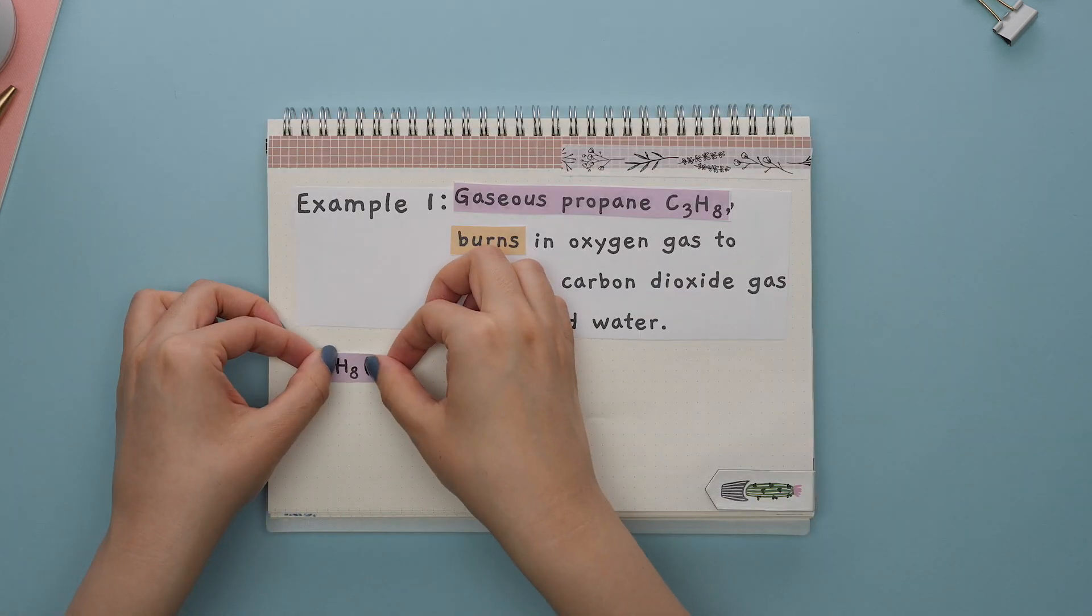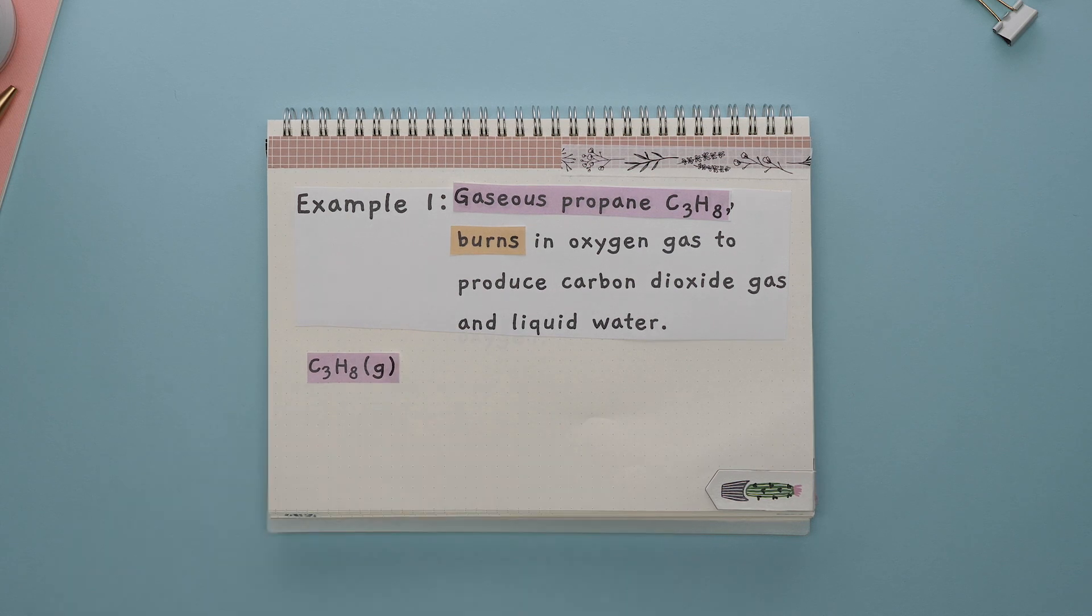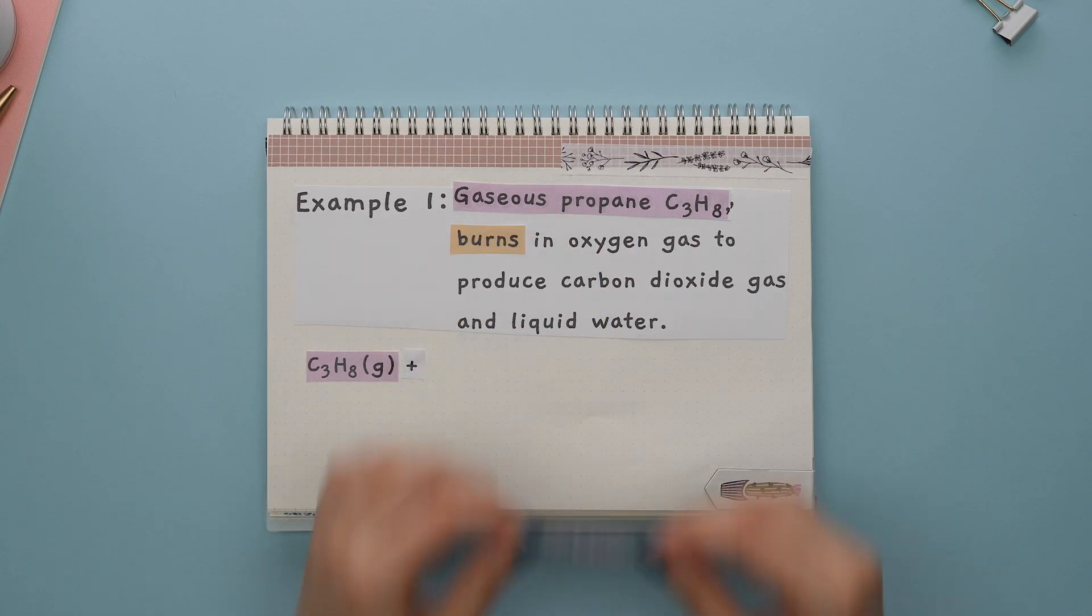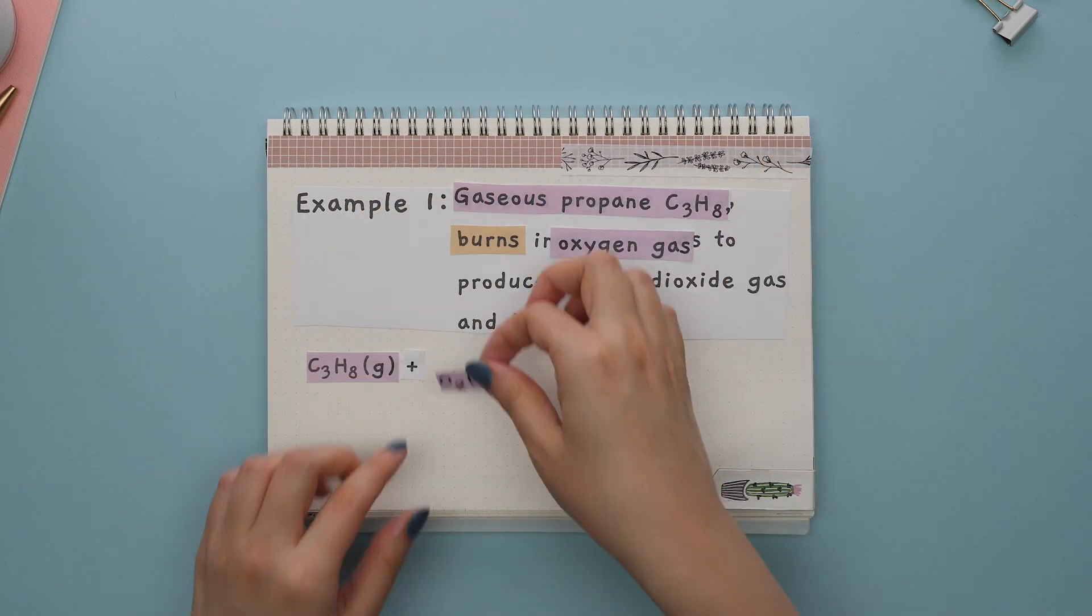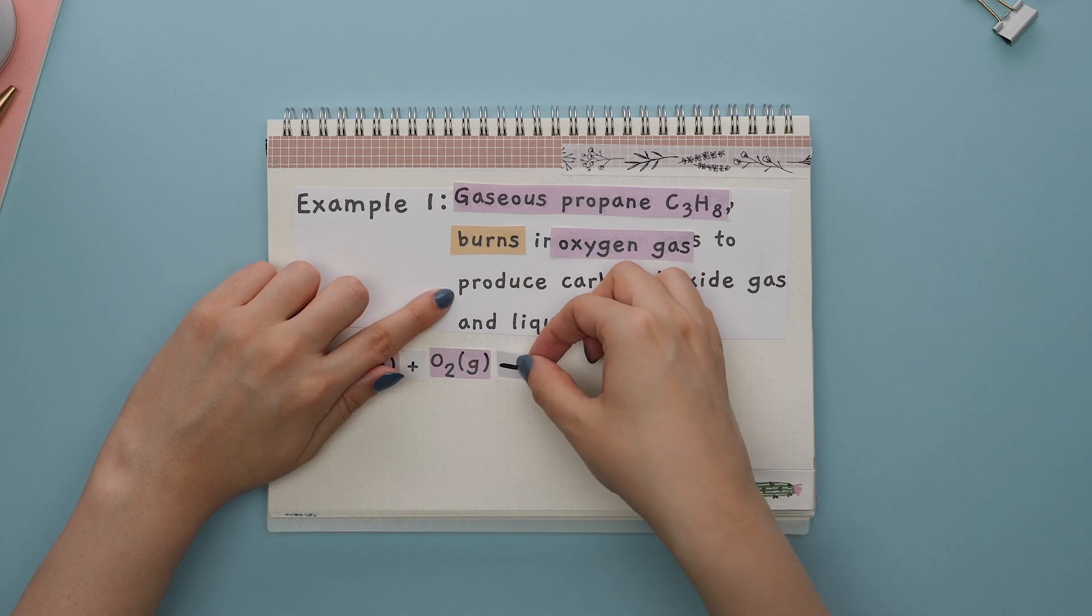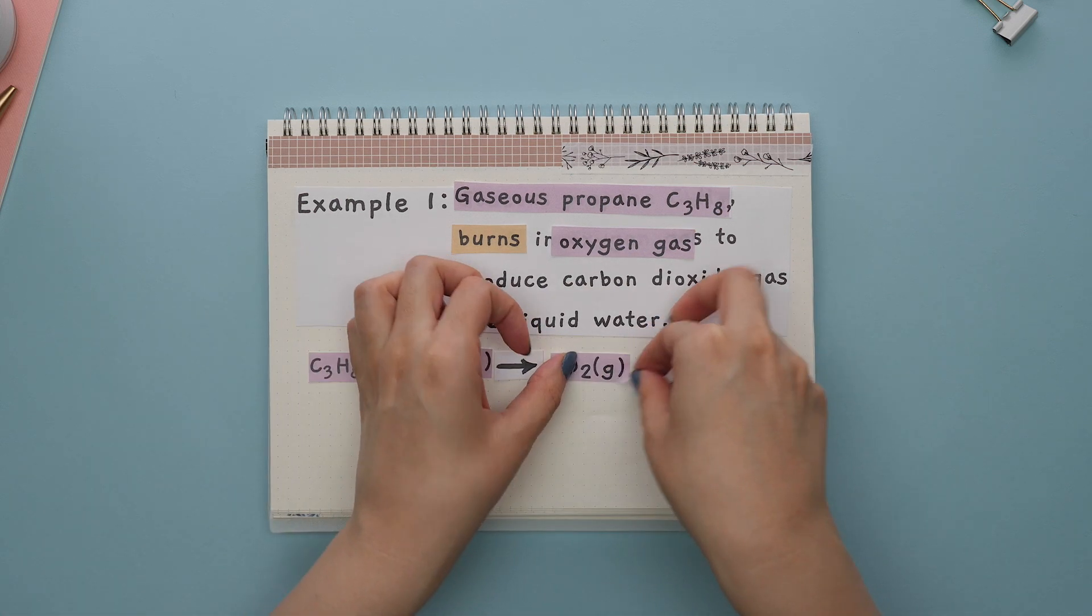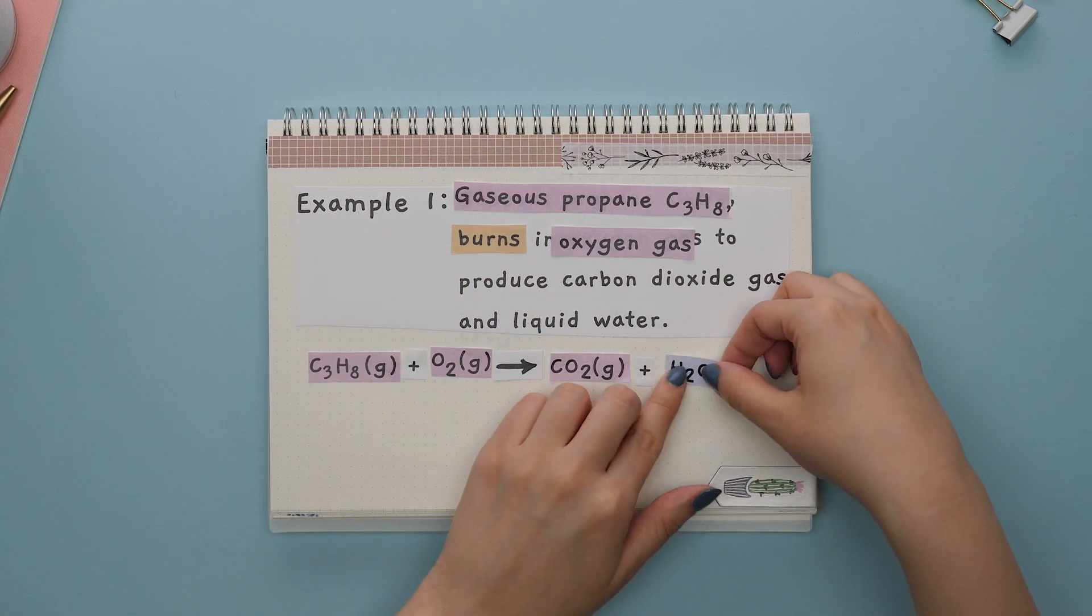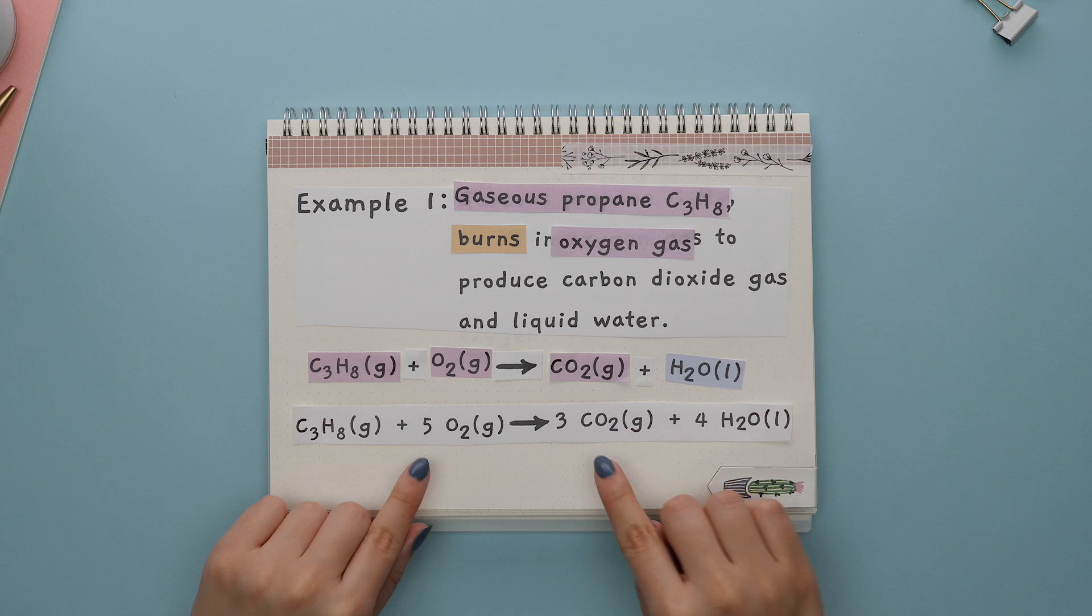So we know our reactants are C3H8 in its gas state, and oxygen gas refers to O2 again in its gas state. Next, the word produce tells us that our products are carbon dioxide gas and liquid water. And this is what our balanced chemical equation would look like.